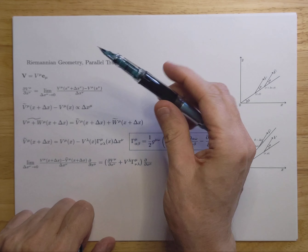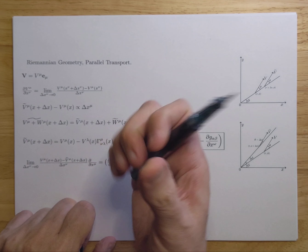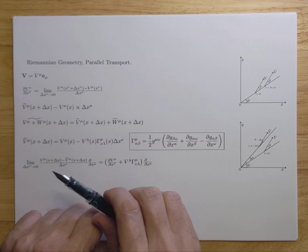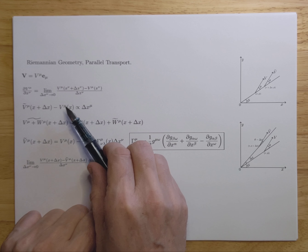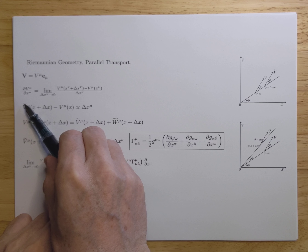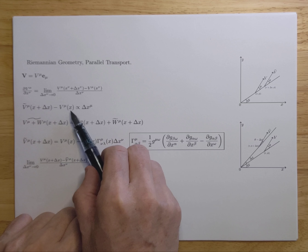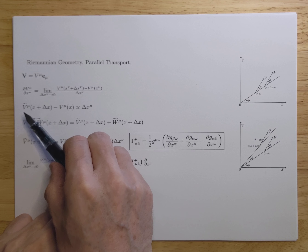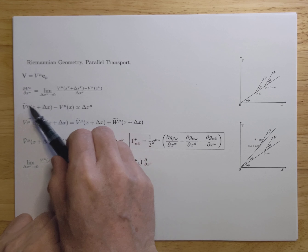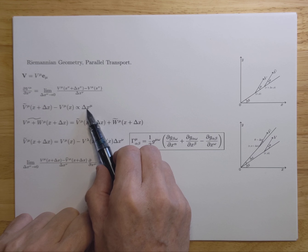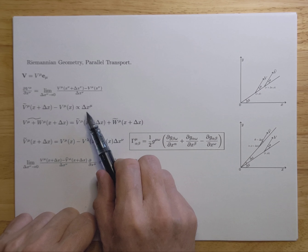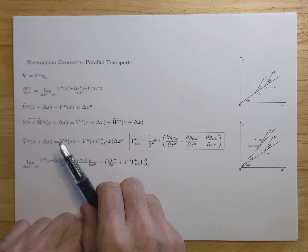If you want to transport a vector in Riemannian geometry in a curved space manifold, you not only have to take care of your components but also your basis vectors. In order to do that, you would like to see that two rules are met. You want to make sure that if you transport the φ^mu vector to a new location x plus delta x — where φ̃^mu are the new components — you want the difference φ̃^mu minus φ^mu to be proportional to delta x. So if you move in the R direction, it needs to be proportional to δR, and if you move in the φ direction, it needs to be proportional to δφ.